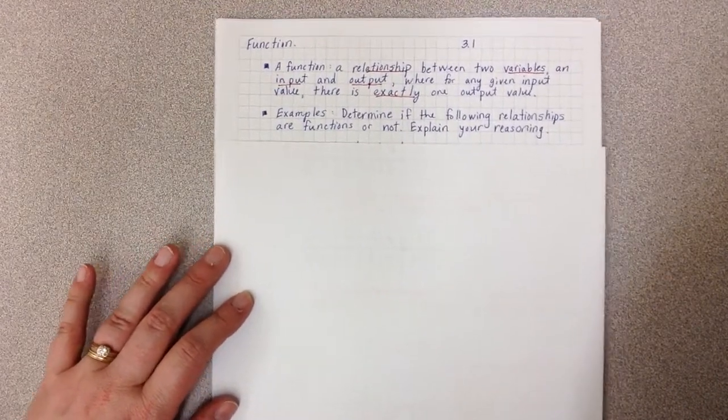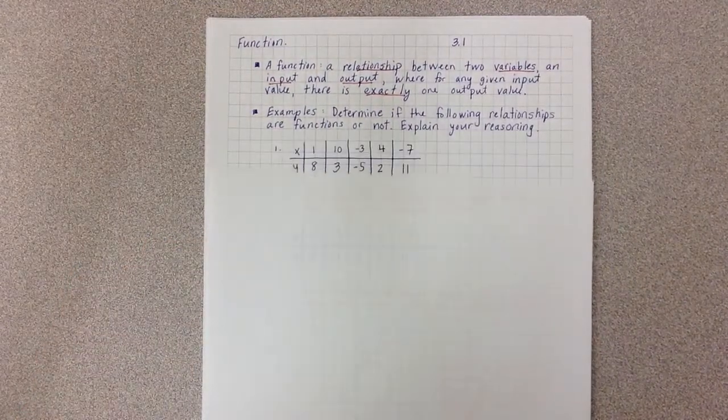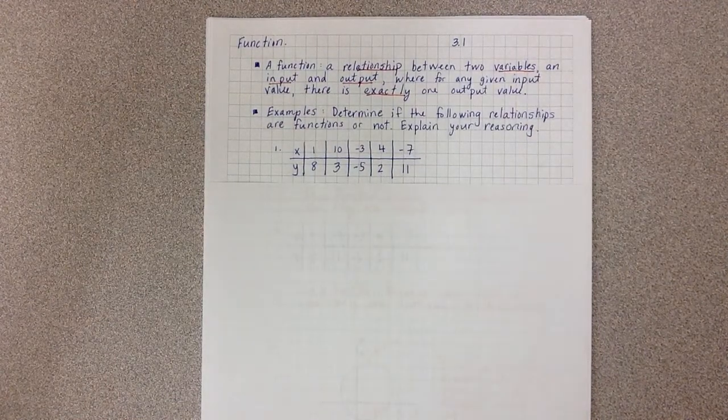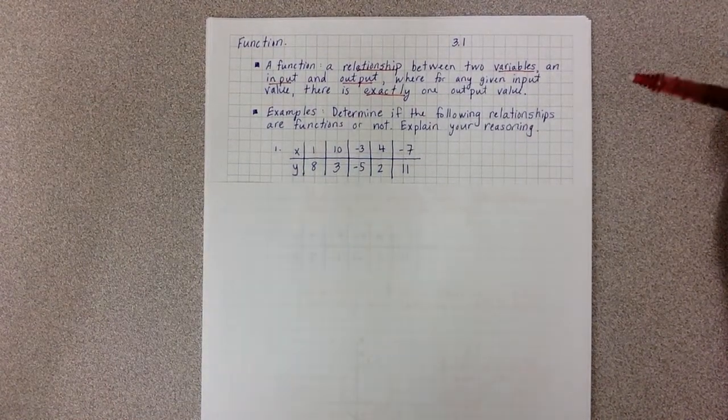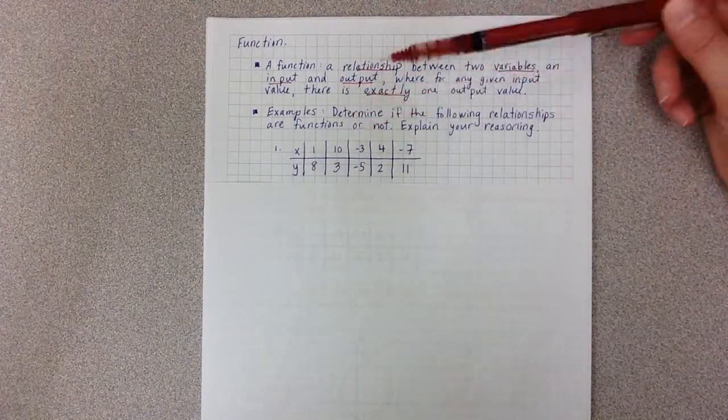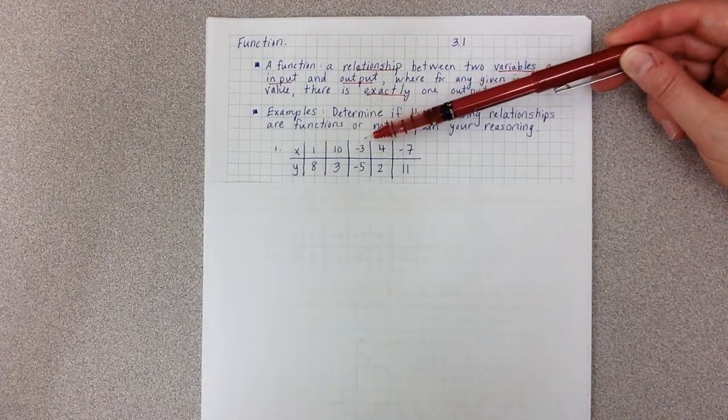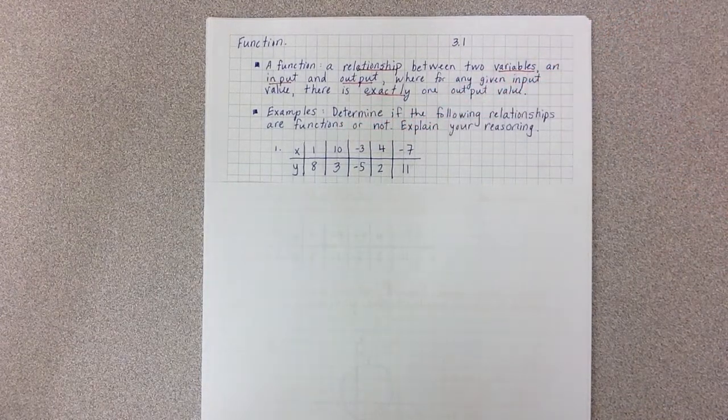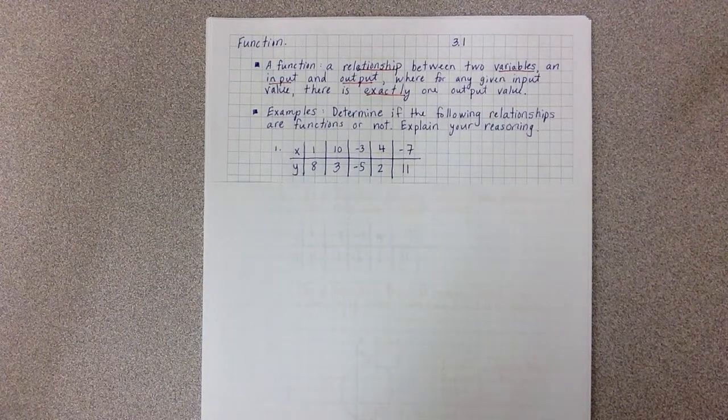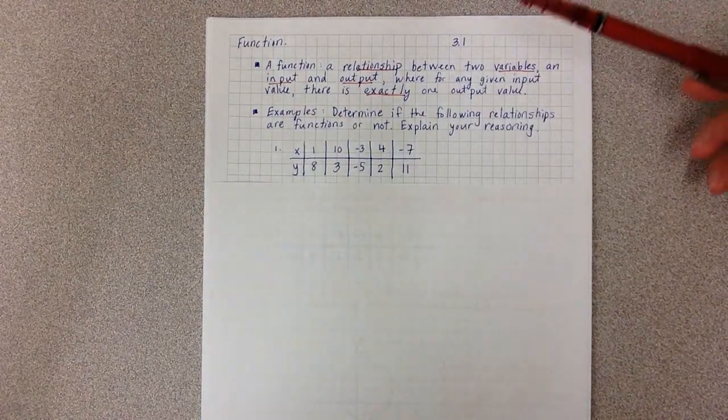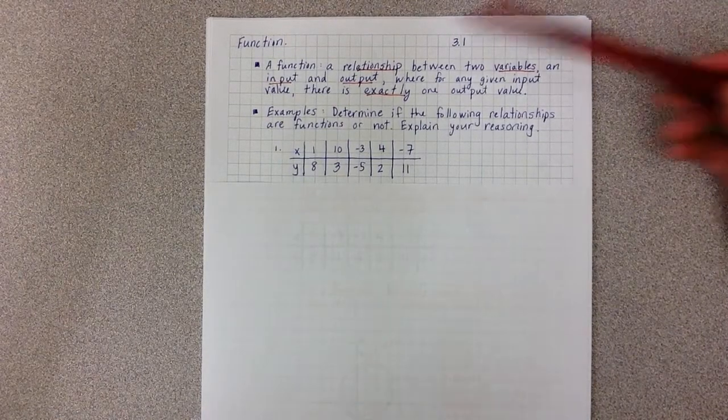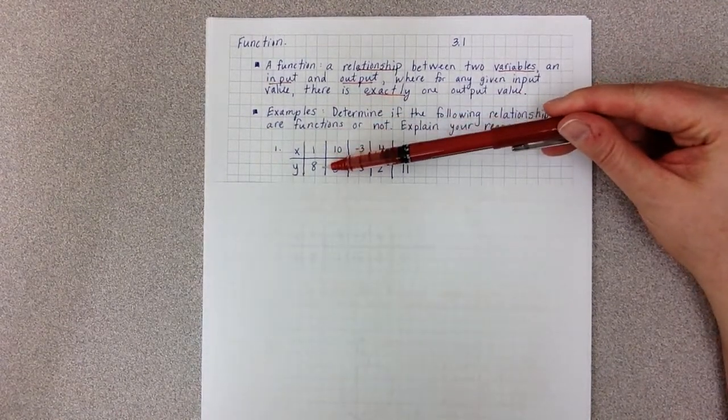Our first example is a table. When determining if a relation is a function, we always start by looking at our input values and check to see if any repeat. So I have 1, 10, -3, 4, -7. None of them repeat, which means I don't have to do the second part of my test. Because none of them repeat, they can't have more than one value. One doesn't repeat, so it only has one value, 8.